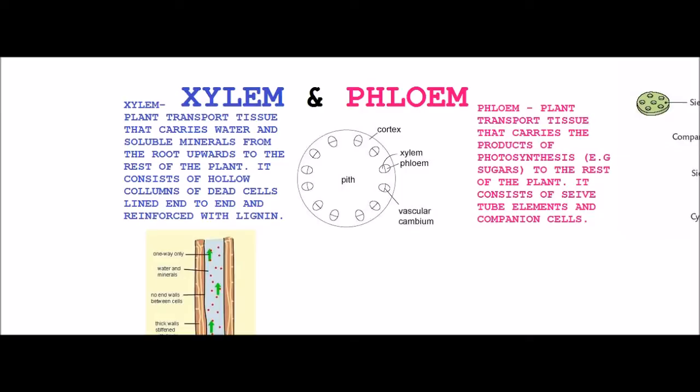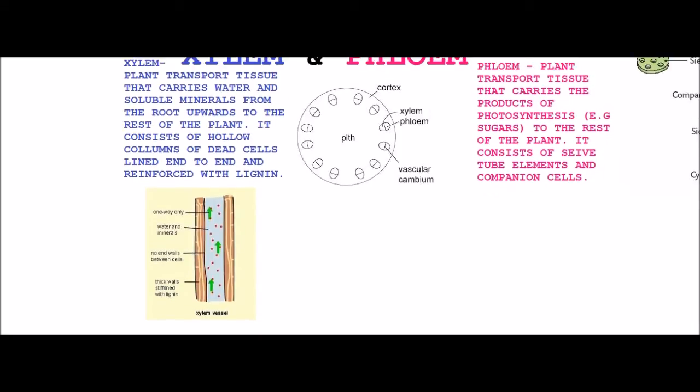The xylem is the plant transport tissue. Remember that xylem and phloem are both tissues, so if you get a question asking what tissue, xylem and phloem are both tissues. It carries water and soluble minerals from the root upwards to the rest of the plant. It consists of hollow columns of dead cells lined end to end and reinforced with lignin.